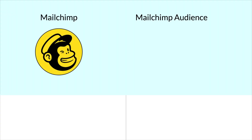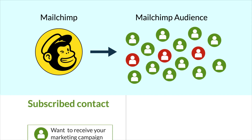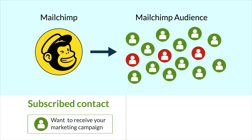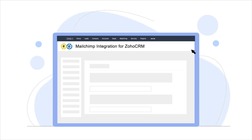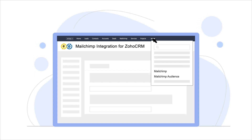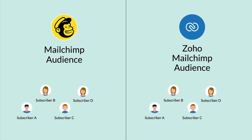MailChimp comprises a MailChimp audience which has subscribers and unsubscribers. The subscribed contacts are those who want to receive your marketing campaign, while the unsubscribed contacts don't want to receive your marketing campaign. You also have an added module along with the integration called MailChimp Audience, and all your MailChimp audience will be safely synced on your Zoho CRM with the help of the MailChimp integration for Zoho CRM.